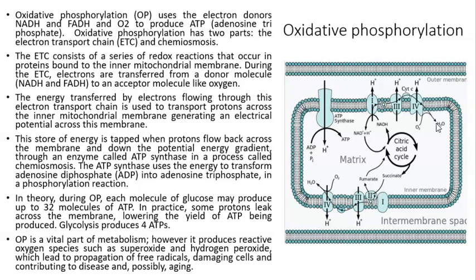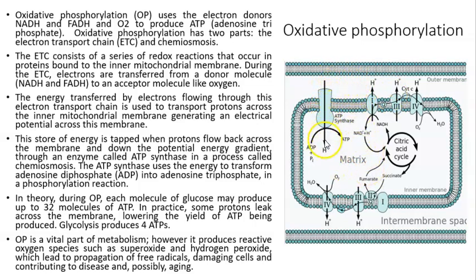The energy transferred by electrons flowing through the electron transport chain is used to transport protons across the inner mitochondrial membrane, generating an electrical potential. Hydrogen accumulates in the intermembrane space more than in the matrix. This stored energy is tapped when protons flow back through ATP synthase in a process called chemiosmosis, converting ADP plus phosphate into ATP.